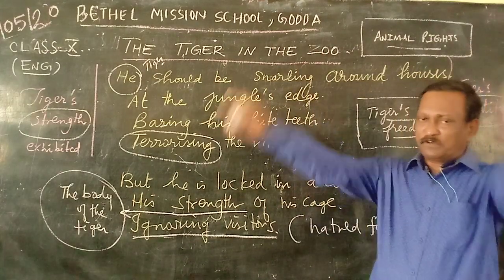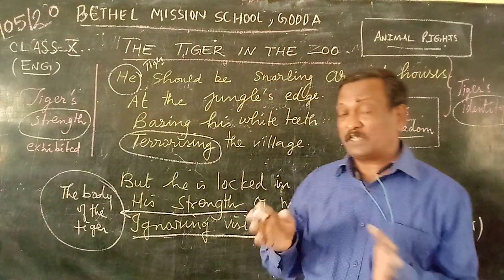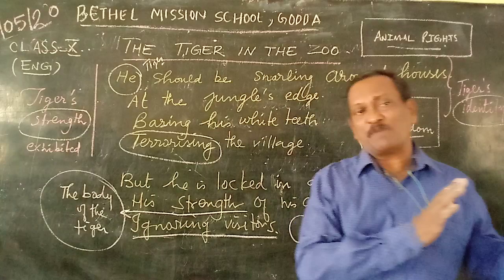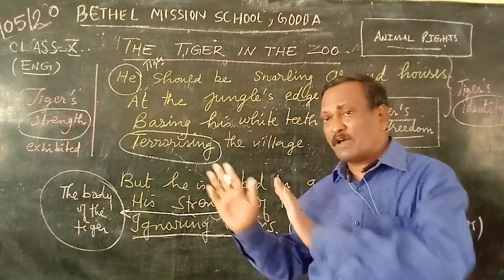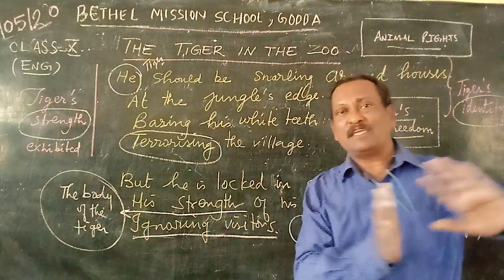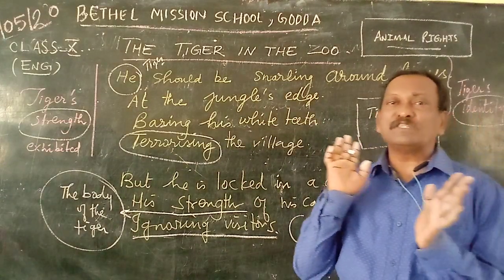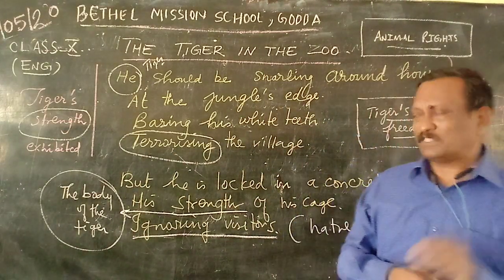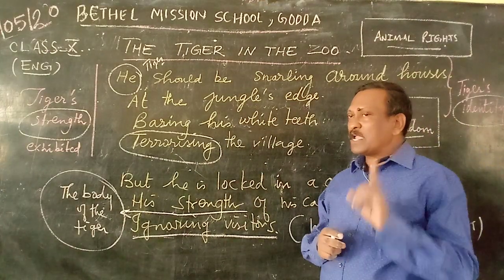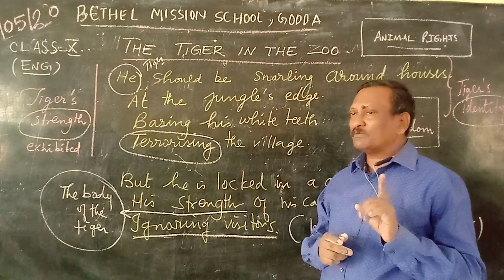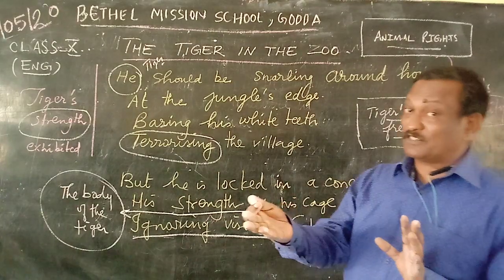A tiger is put behind a cage and he has become a showpiece. The spectators who visit the zoo try to look at him, but he, out of his hatred for human beings, turns away and ignores the visitors. The poet was discussing the freedom of the tiger in the jungle.